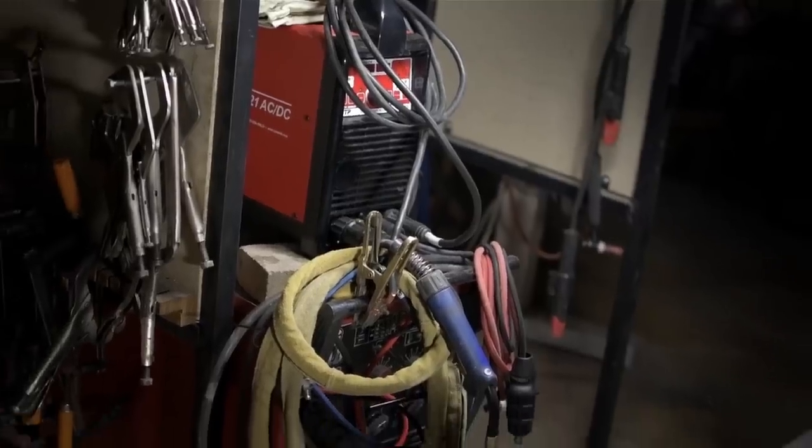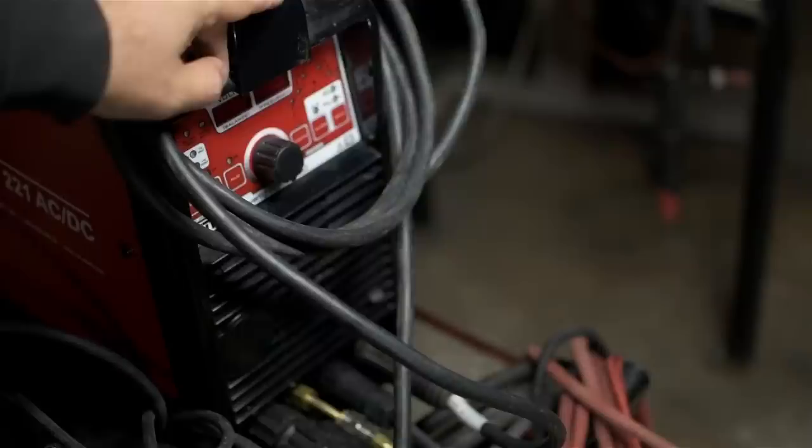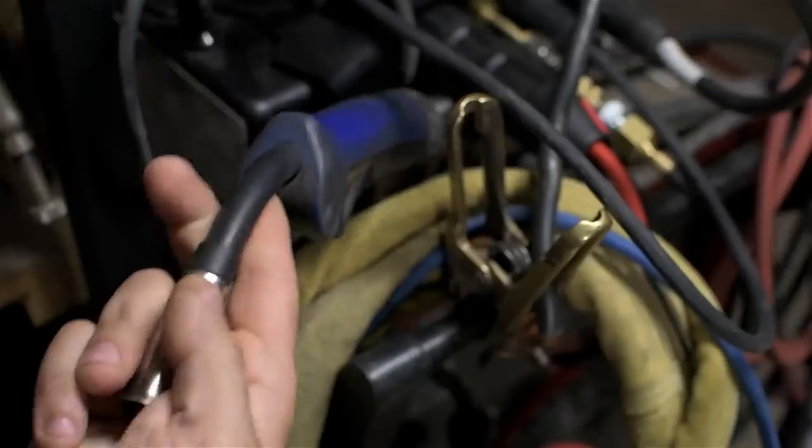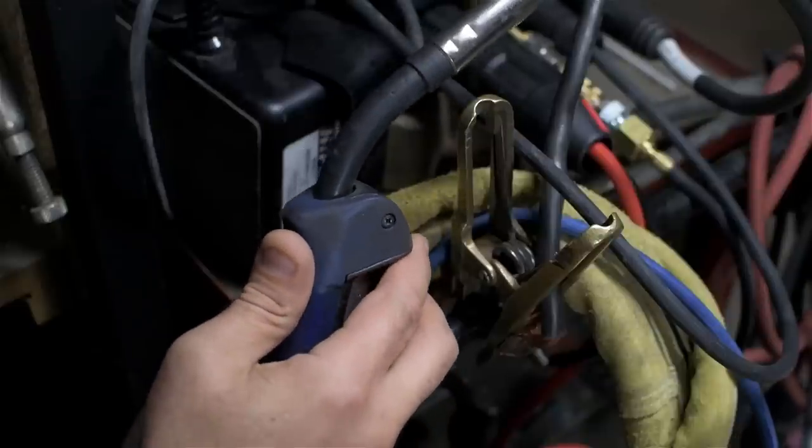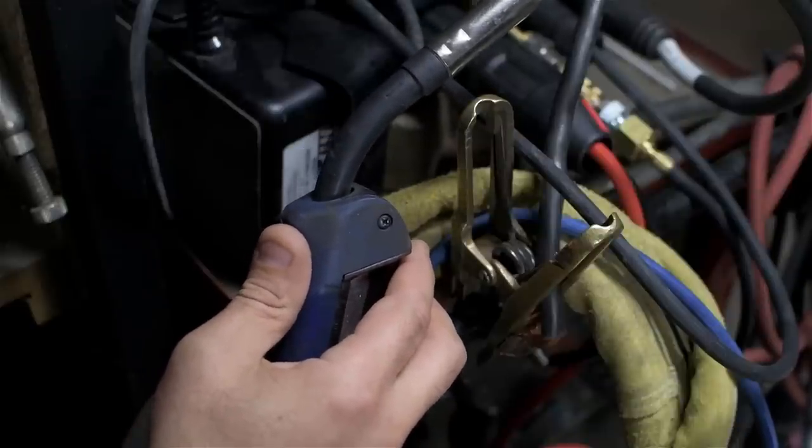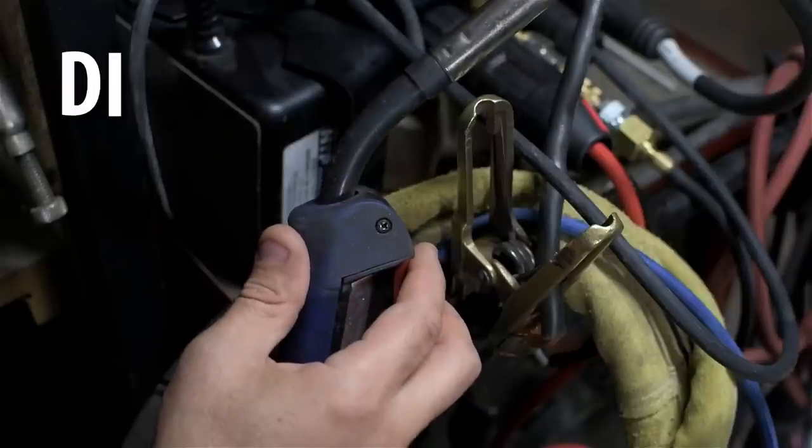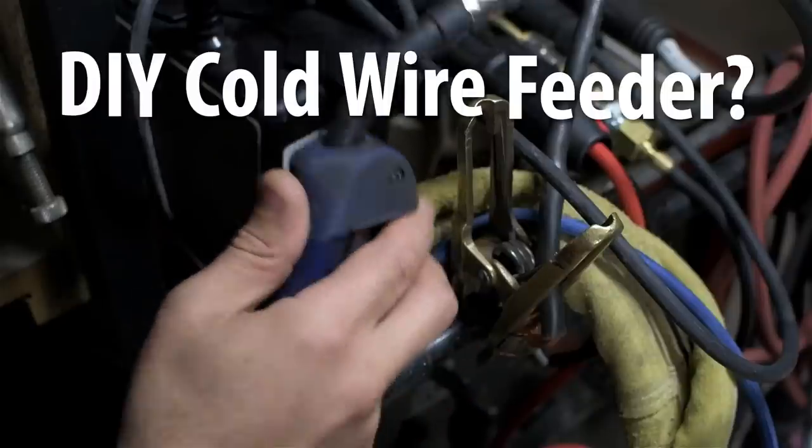And in other bad news, the old TIG welder is gone. Breaking up is hard to do. Next on the chopping block, the MIG welder. Though, to be honest, I'm undecided if I should sell it or put it in a nice filled bathtub to harvest its organs for a DIY cold wire feeder for the TIG. Now that'd be hot. I mean, cold.